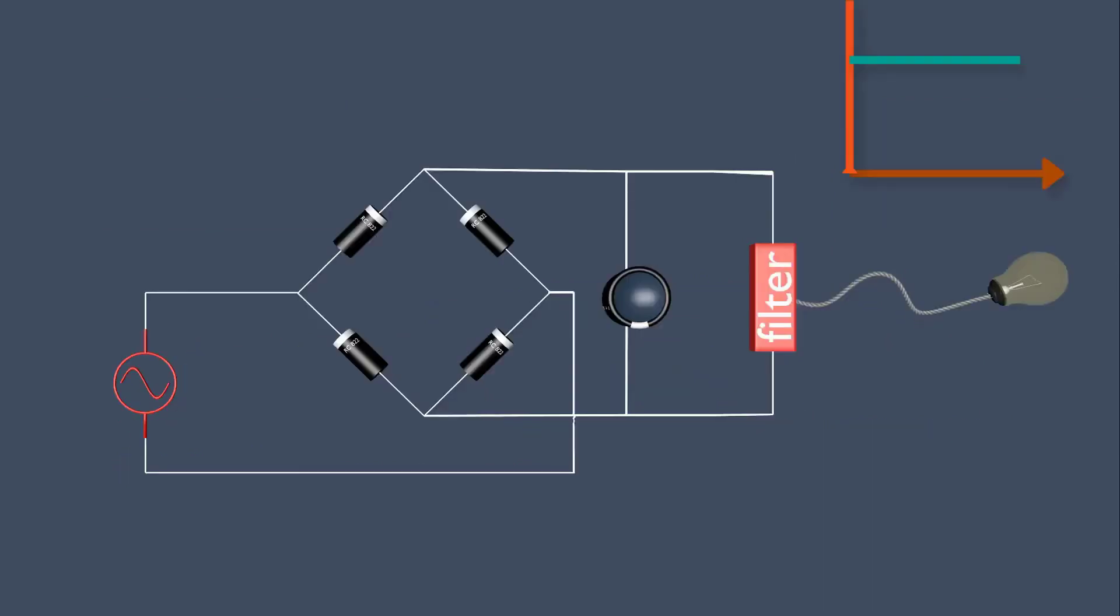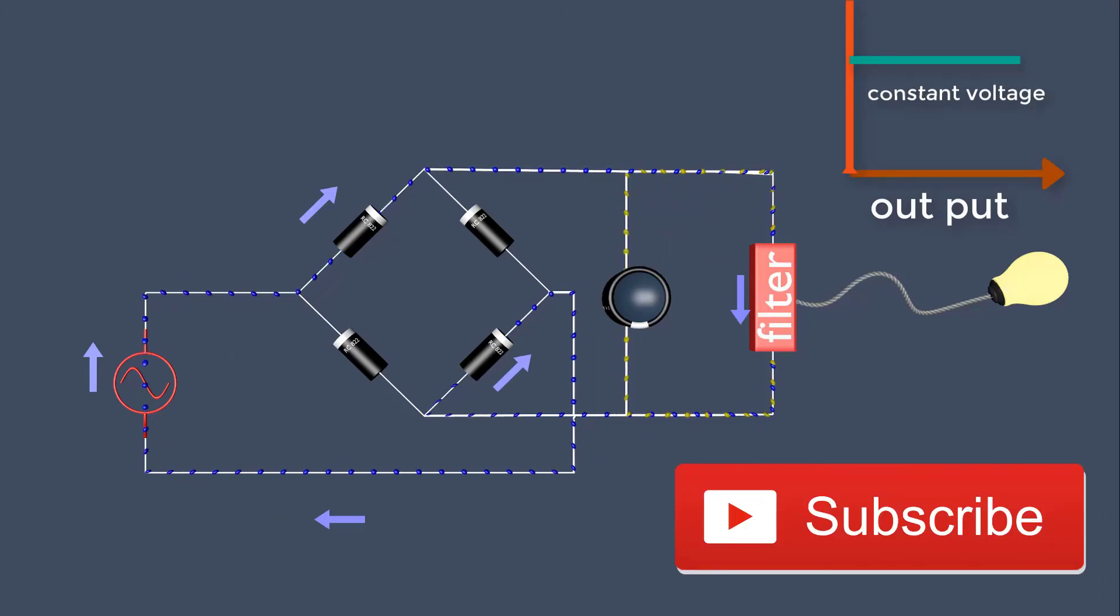Filter eliminates errors in output voltage. It produces constant output voltage to devices.